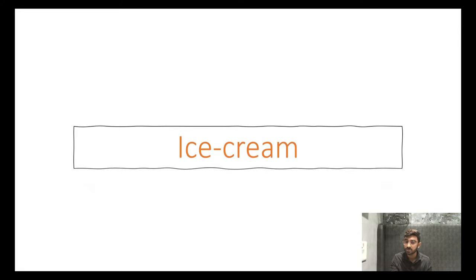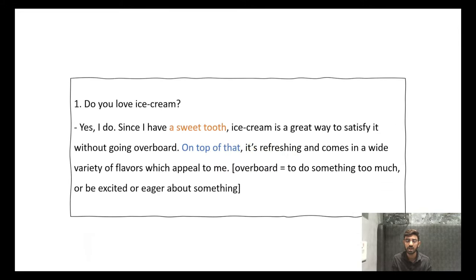After that, the next topic is ice cream. The first question about ice cream: Do you love ice cream? I told you the love question will come. In this case, give a short answer. Not like I mentioned previously. Give it short. You should give like this: Yes I do. Not yes I love ice cream. Short: Yes I do. Since I have a sweet tooth - now I have used this because there are three topics, in exam it won't come like this so you can use it - Yes I do. Since I have a sweet tooth, ice cream is a great way to satisfy it without going overboard.